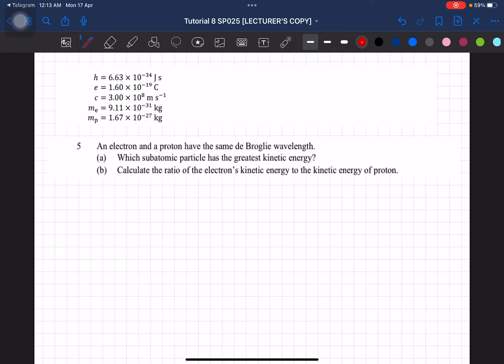Question 5. An electron and a proton have the same de Broglie wavelength, which subatomic particle has the greatest kinetic energy?